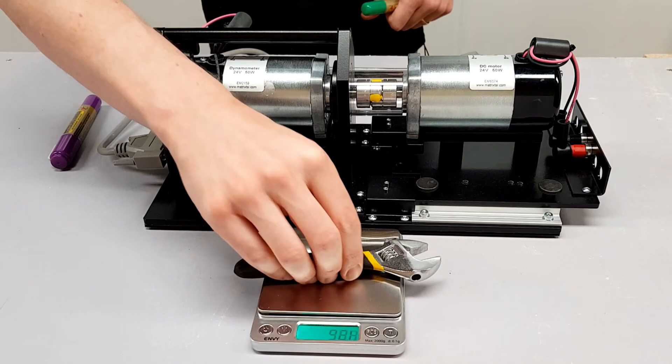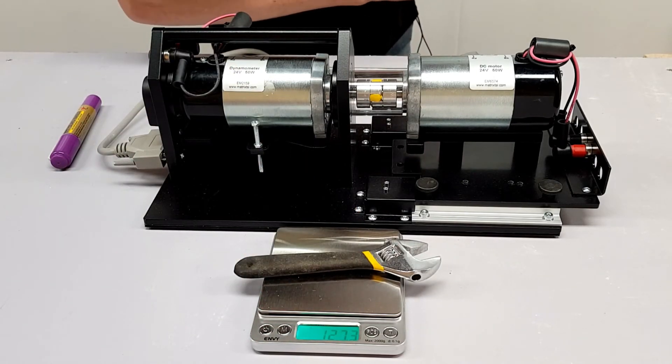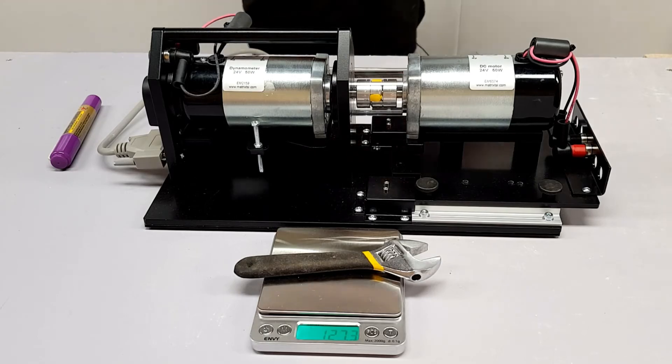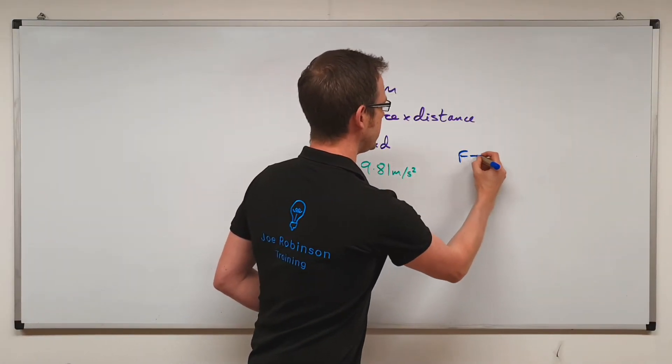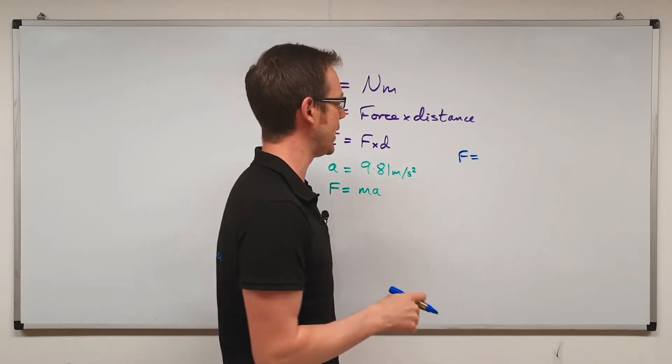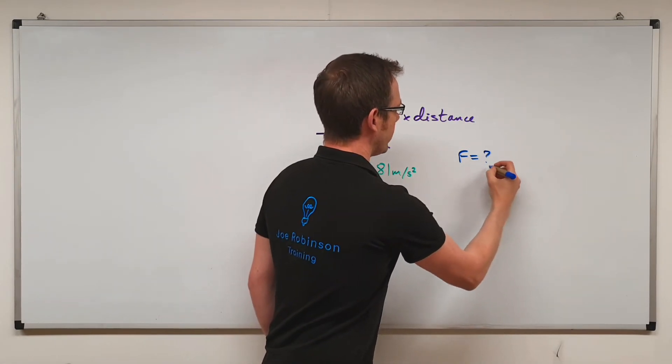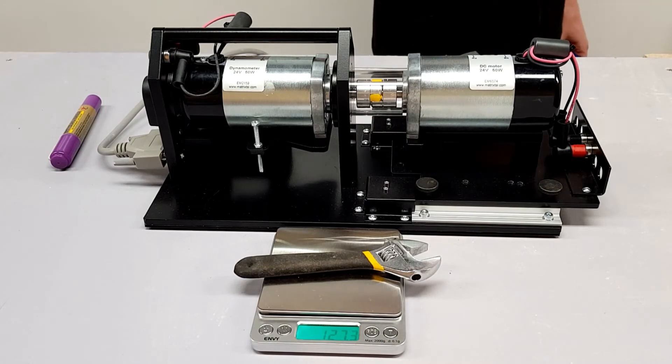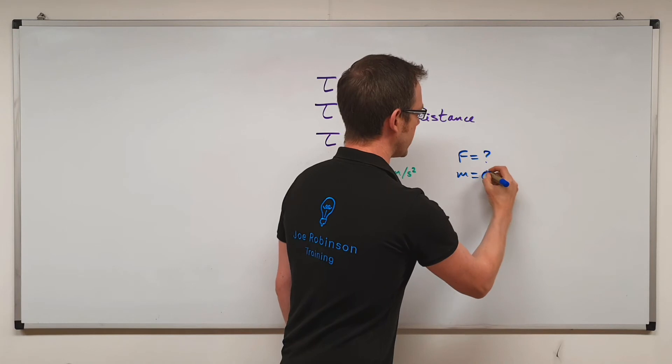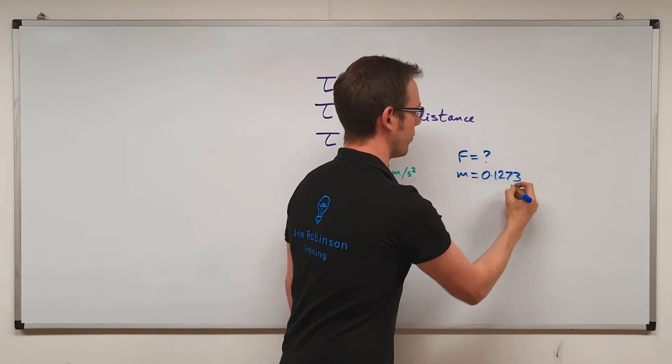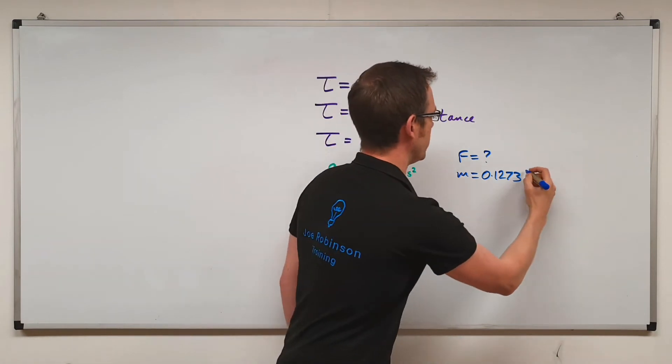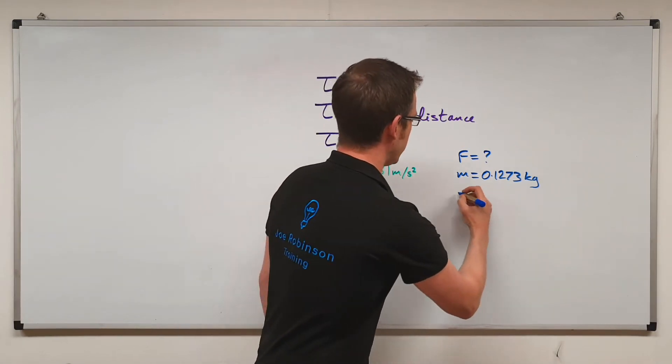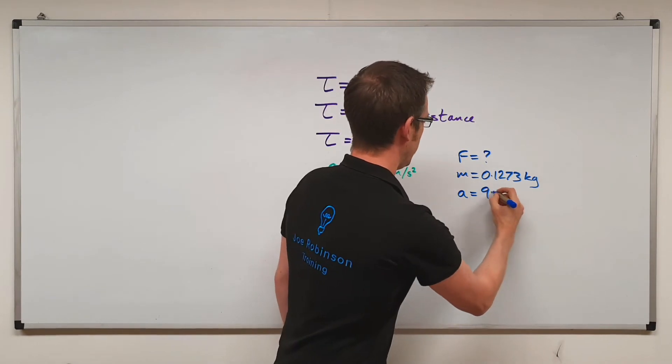If I plonk this spanner on the scale there, we can see we're coming out with a mass of 127.3. So in this example, we want to know what the force is that that spanner is creating by being pulled down by the Earth's gravity. We now know the mass of the spanner is 127.3 grams. So we'll convert that into kilograms by dividing it by a thousand, which gives us 0.1273 kilograms. That's the value in grams just divided by a thousand to turn it into kilograms.